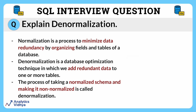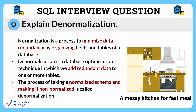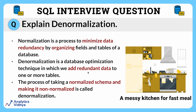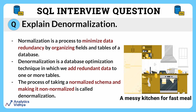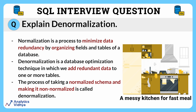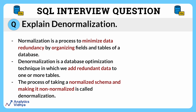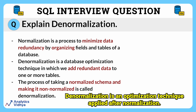Now, let's see what denormalization is. Denormalization basically refers to a database optimization technique in which we add redundant data to one or more tables. It means sometimes we put data together in a way that's not super neat and organized, but it helps us find things faster. Basically, the process of taking data that is normalized and making it non-normalized is called denormalization. However, note that denormalization does not mean reversing normalization or not to normalize. Remember, it is an optimization technique that is applied after normalization.